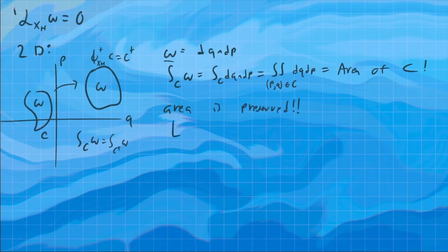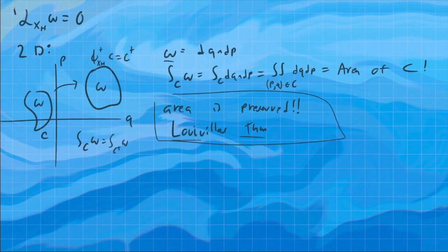This is called Liouville's theorem. It says the area in phase space is preserved. Now we can see this a different way in 2D, just to give some more intuition for why this is.